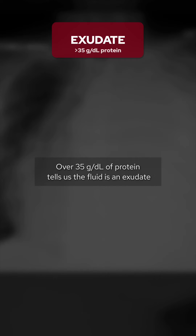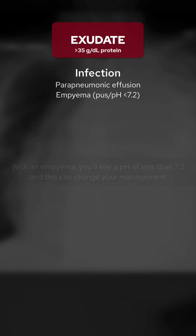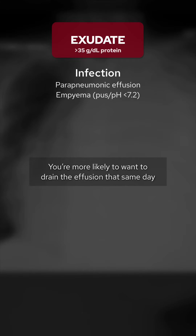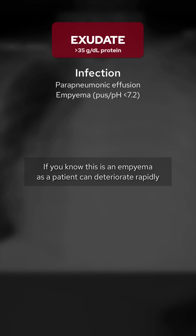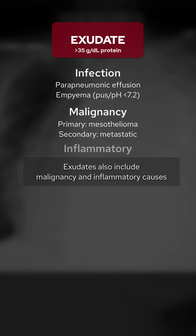Over 35 grams per deciliter of protein tells us the fluid is an exudate, including causes like infection — including a parapneumonic effusion and empyema. With an empyema, you'll see a pH of less than 7.2, and this can change your management. You're more likely to want to drain the effusion that same day if you know this is an empyema, as the patient can deteriorate rapidly. Exudates also include malignancy and inflammatory causes.